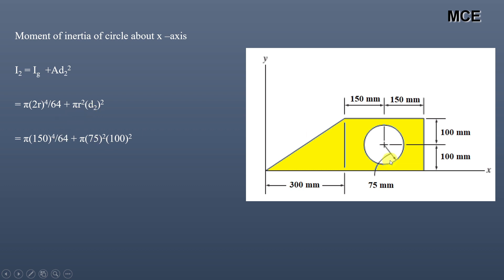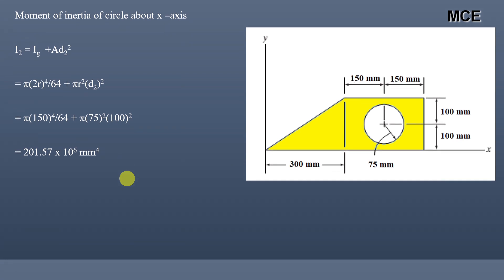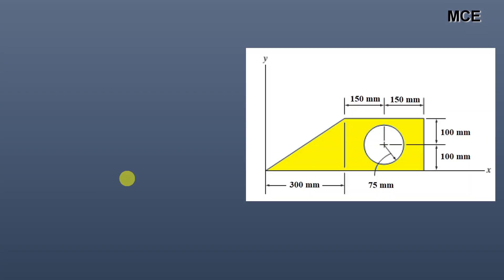The radius of this circle is 75 mm, making the diameter 150 mm. The distance between the centroid of this circle and the x-axis is 100 mm. Substituting these values into the equation, the moment of inertia of the circle about the x-axis is 201.57 × 10⁶ mm⁴.